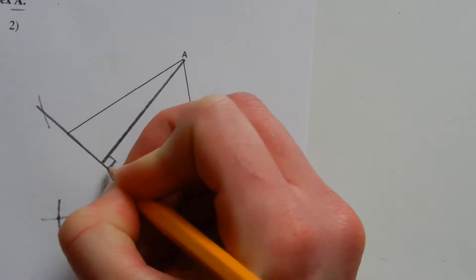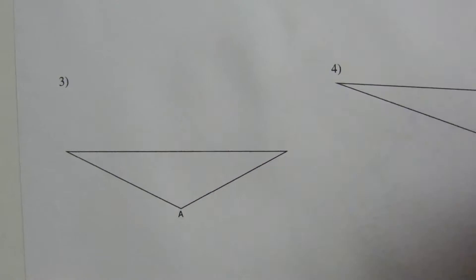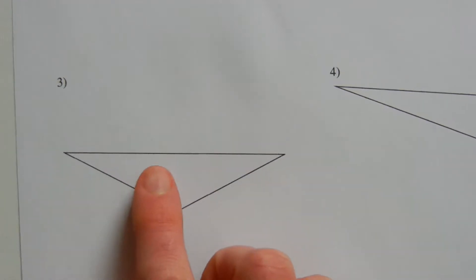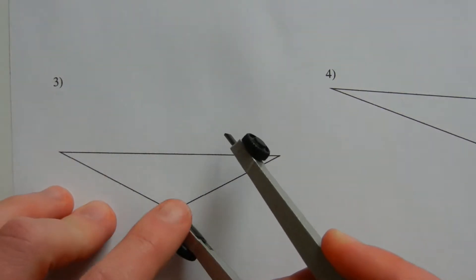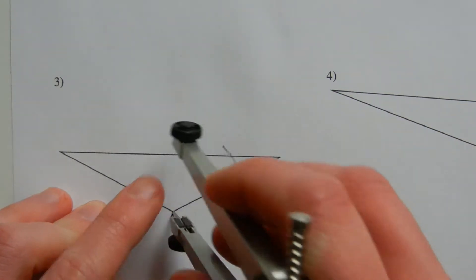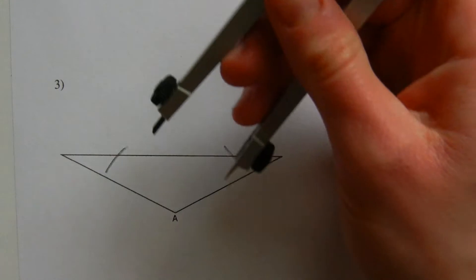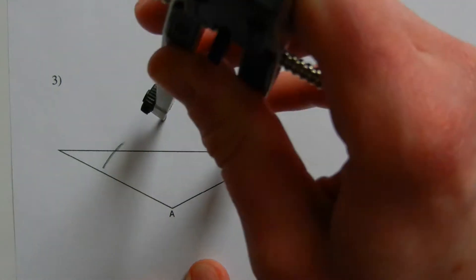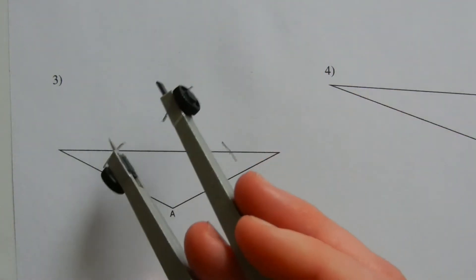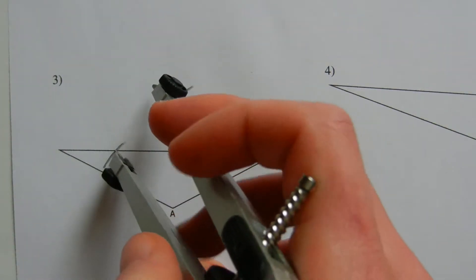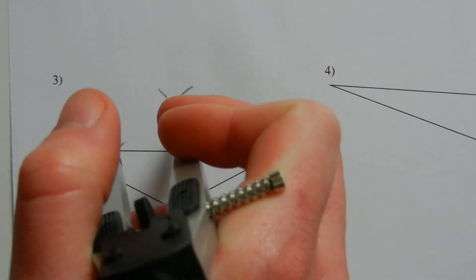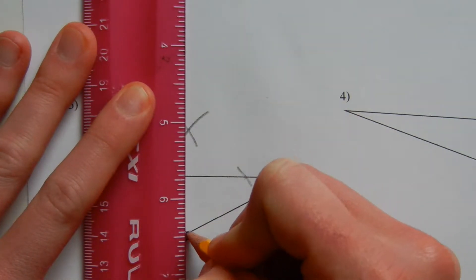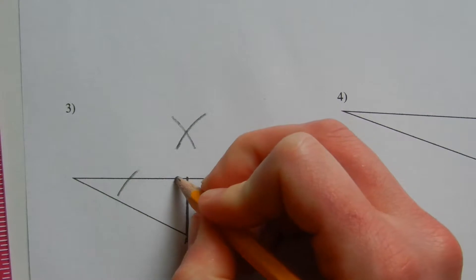For number three, going through the same steps except I'm not going to extend the side opposite A because there's a lot of room to work with. From vertex A I'm going to strike one mark and then another mark. Moving my compass to a little more than half that distance, I set it on one intersection point and make an arc, then move it to the other intersection point and strike another mark. I then align my straight edge from A to that intersection point and draw my altitude, which will be perpendicular to this side.